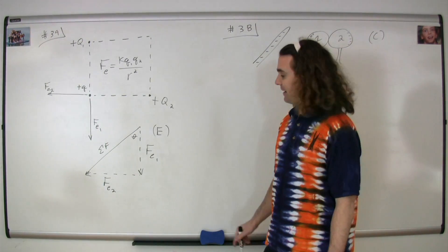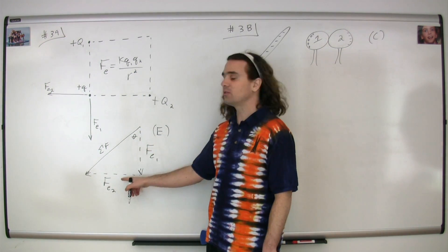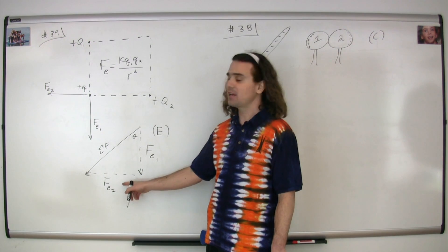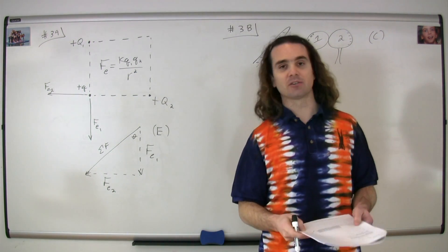Doing our tip to tail vector addition, we have electric force one and electric force two. These have the same magnitude, so these two sides of the triangle are going to be the same. This gives us a 45 degree angle, so the correct answer is E.